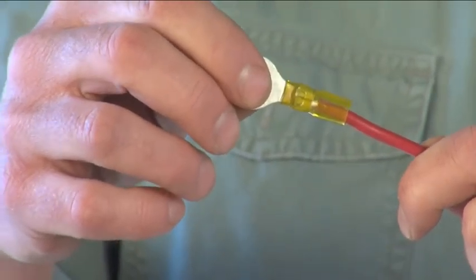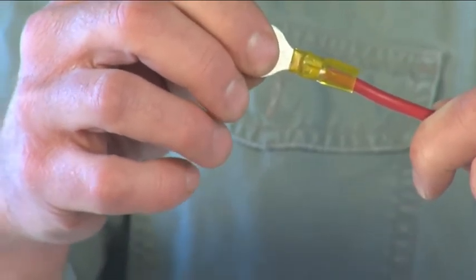Once you've made the crimp, test it by tugging on the wire to make sure it doesn't slip out of the sleeve.